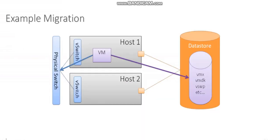Let's look at an example migration. Here we have a virtual machine running on host one. Maybe update manager has just installed patches on a VMware ESXi host and I need to reboot it. Ideally, I'd like to get all the VMs off of it first. So I initiate a migration of this VM from host one to host two. But there are a few prerequisites that need to be in place — number one and most important: shared storage.